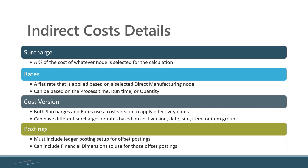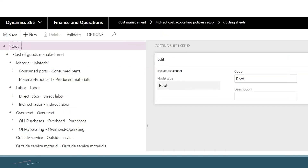I can have different cost versions, so I can compare this year versus last year, or this month versus last month. Then, how am I going to post my costs? Where are they going to go from a general ledger point of view, and how detailed am I going to get down the tree?